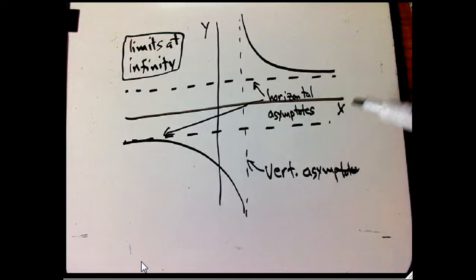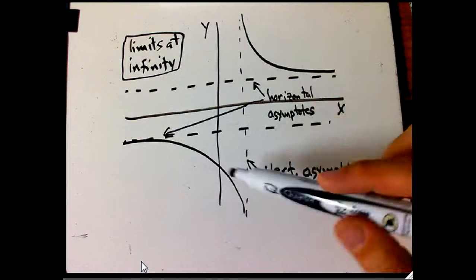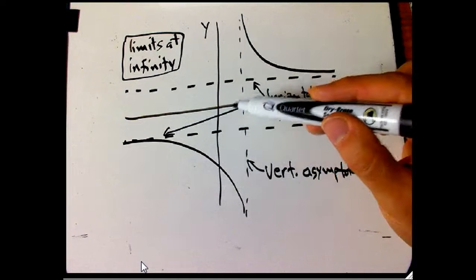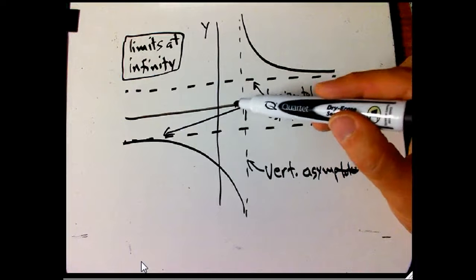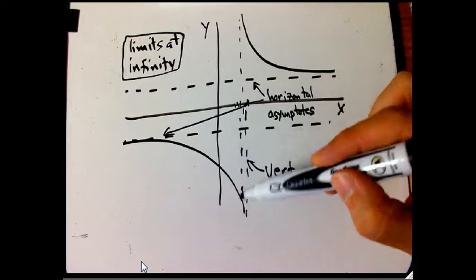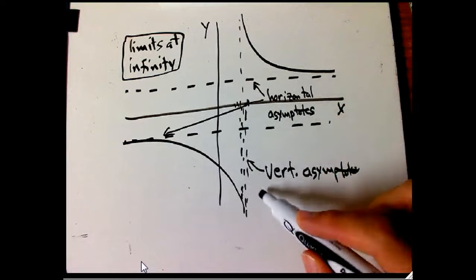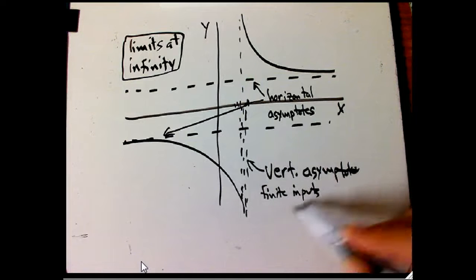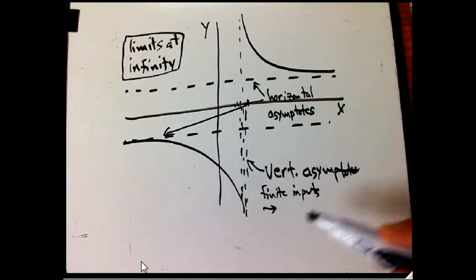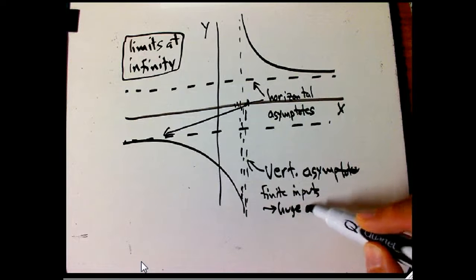And what does it mean to be a horizontal asymptote? What would it mean to be a vertical asymptote? It meant that when x got really close to some finite value, like say this is x equals 1, when x gets really close to 1, the y values get arbitrarily large. So here we put in finite inputs and we get huge outputs.